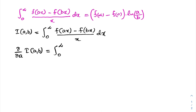On the right-hand side, the integral from zero to infinity: if we differentiate f(ax) with respect to a, we get f'(ax) times x, but since we have one over x, the x gets cancelled, leaving just f'(ax) dx.